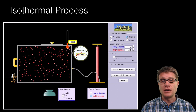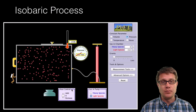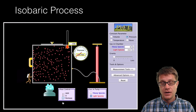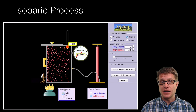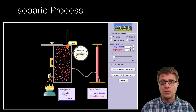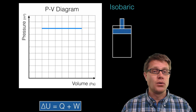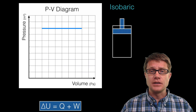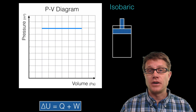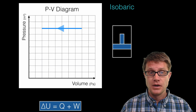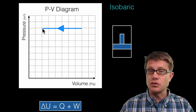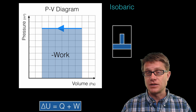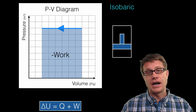Finally, let us look at the isobaric process. We keep pressure the same — the piston can simply move back and forth. If we cool it down, the molecules move slower and the piston moves in. If we add heat, the molecules move quickly and since pressure stays the same, the piston moves out. The PV diagram shows a horizontal line as volume changes. The area under the pressure-volume curve is the amount of work done. Moving from a large volume to a small volume is negative work by the gas, which means positive work by the surroundings.